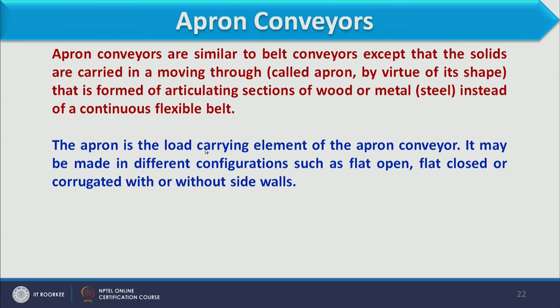The apron is the load-carrying element of the apron conveyor. It may be made in different configurations—flat open, flat closed, or corrugated—with or without side walls. Aprons are made of metal sheets or sometimes wood, connected side by side to form a chain. Corrugated metal sheets provide friction so that even heavy material stays in place during transport.